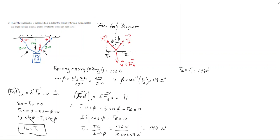If you want to express this as a vector, T2 is 147 newtons at 48.2 degrees to the right of the positive y-axis, and T1 is 147 newtons at 48.2 degrees to the left of the positive y-axis. With this, we have solved the problem and found the tension in the cables.